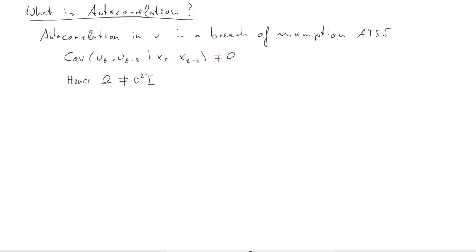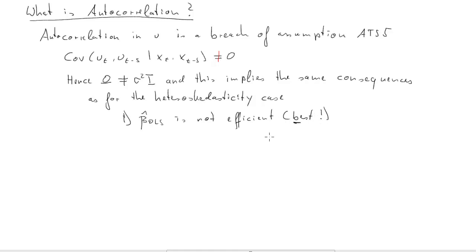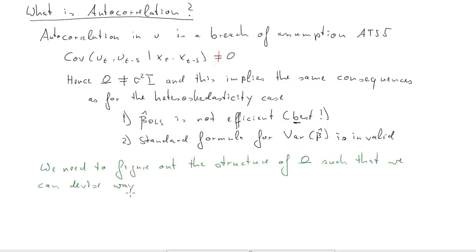Therefore, the omega is going to be unequal to sigma squared times the identity matrix, and that means all the consequences we discussed about the heteroscedasticity case are valid here as well. Beta hat is not efficient, not the best estimator. And our standard variance formula for beta hat doesn't work, and that has consequences for inference. We had to devise some different formula for the variance of beta hat.